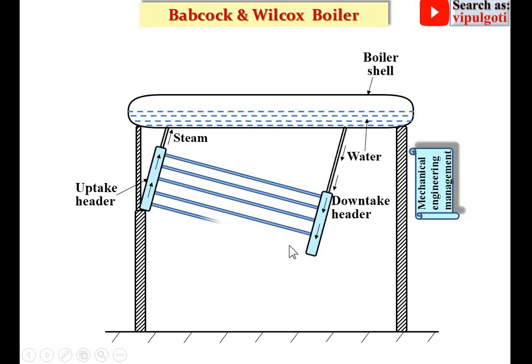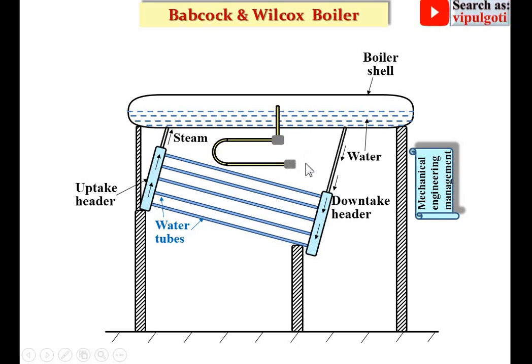These are the water tubes. This whole structure is once again supported by one frame. This is one more part — the tubes of the super heater. Steam is coming from the upper portion of the boiler shell, it is converted into superheated steam, and then it is supplied by the steam stop valve — that's why it is called the super heater.